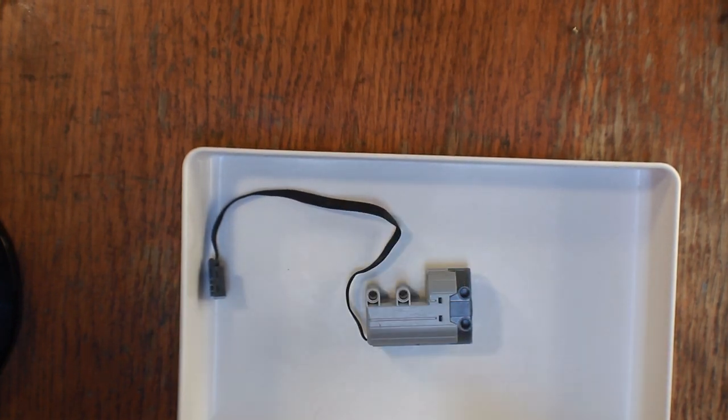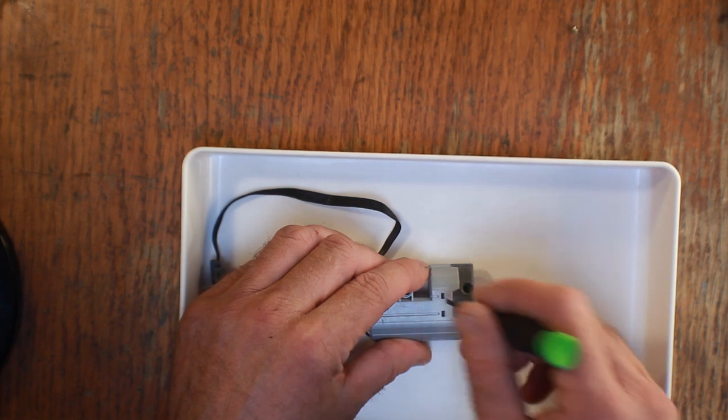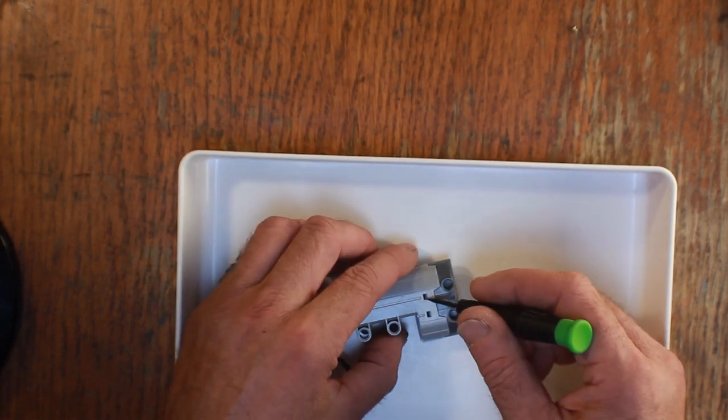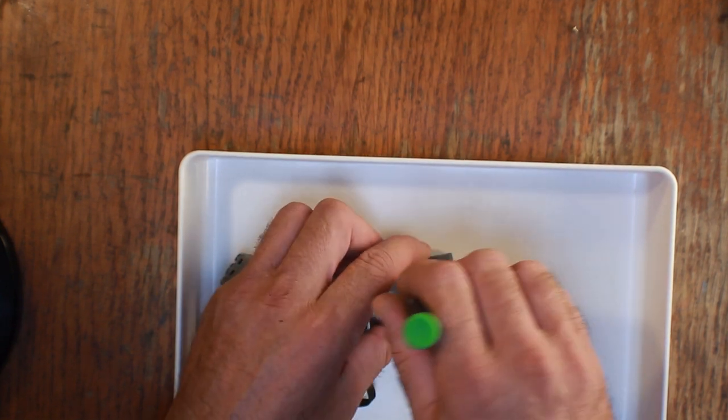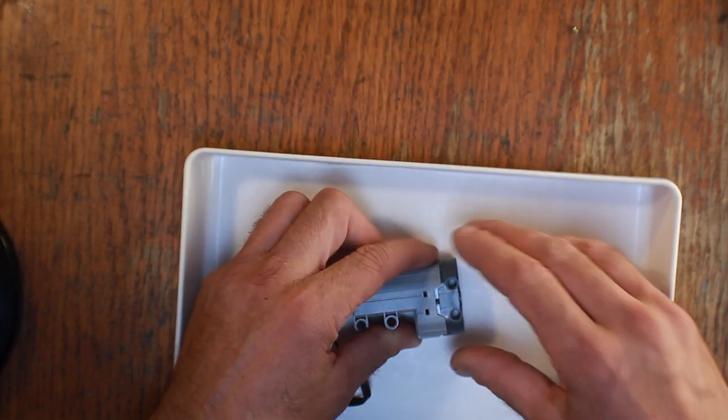And now what's happening here is the contacts on the inside are getting dirty. And it's really easy to fix. We're just going to pop this open. And I've got a little tray here in case I spill. I really don't want to, but just in case.